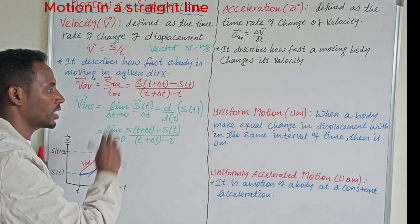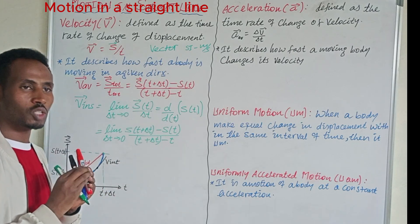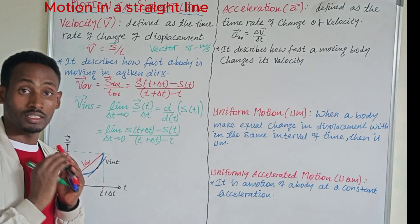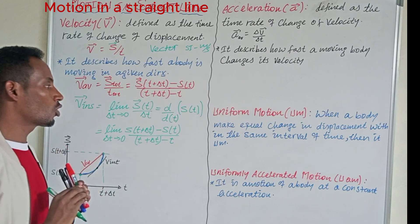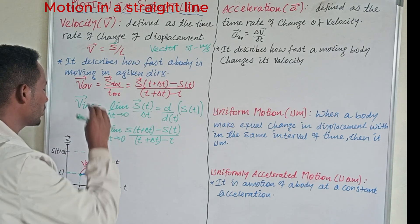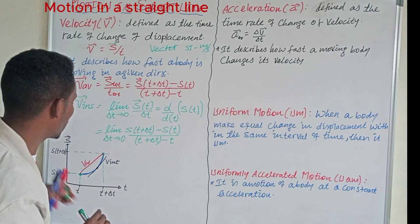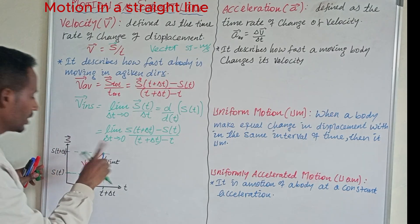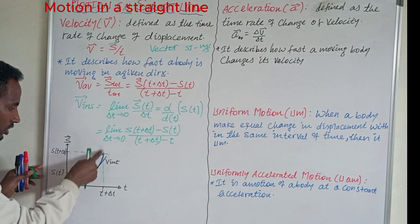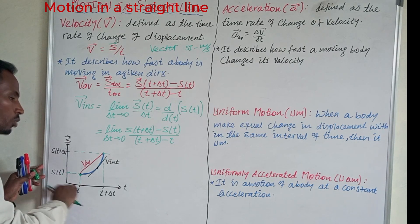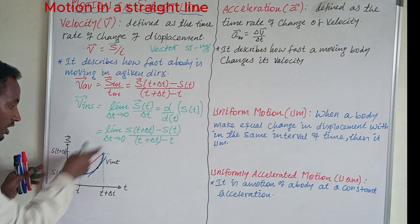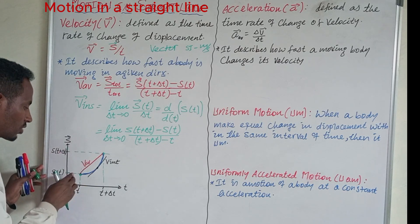Here we see the velocity of linear motion, which is related to linear motion. The mathematical process is handled differently. Looking at the graph, you can see the blue color on the graph. The red line represents the average velocity.